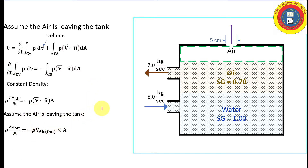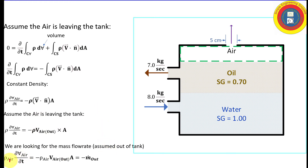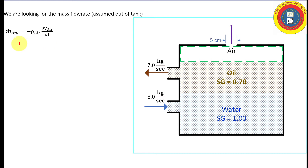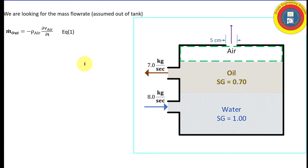Carrying through the simplification, we get that density times the time rate of change of volume of air equals minus the mass flow rate of air out of the tank — call this Equation 1. To check physical sense: if dV_air/dt is negative, a negative times a negative gives positive mass flow rate out, confirming the assumed direction. If dV_air/dt is positive, the result is negative, meaning air is actually entering the tank.